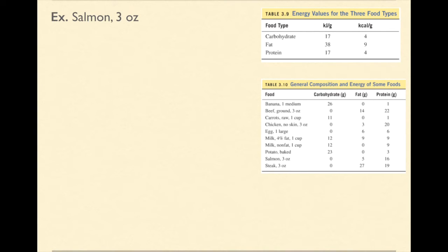Since looking at table 3.10, I know that salmon has five grams of fat. What I can do is I can convert five grams of fat into kilocalories. So I'm going to crisscross swish. I'm going to put grams on bottom, kilocalories up top.